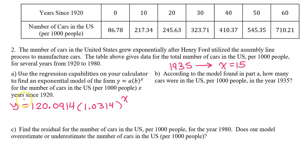Since x is the number of years since 1920, the year 1935 is x = 15. So we need to evaluate our model at 15.